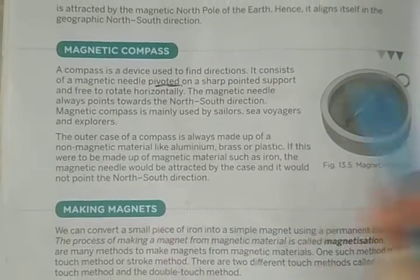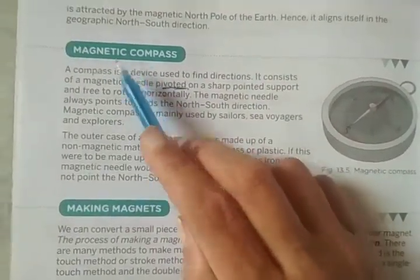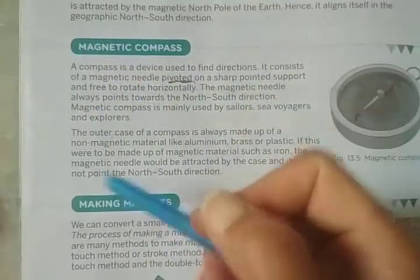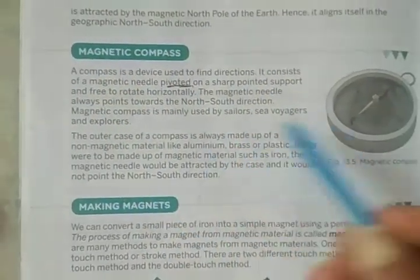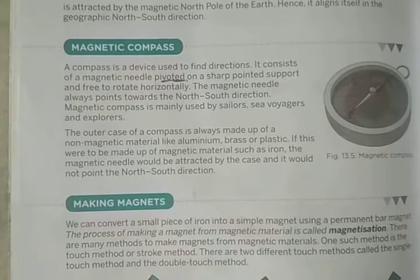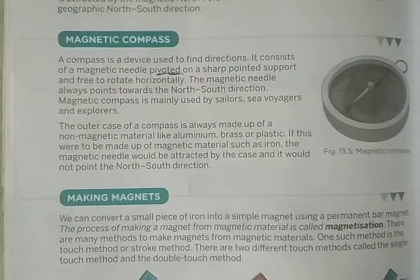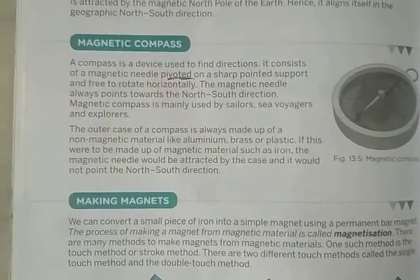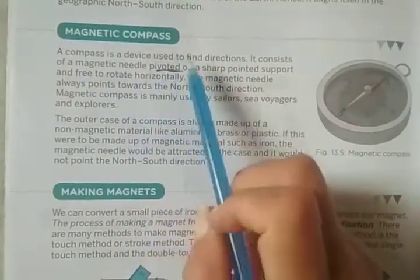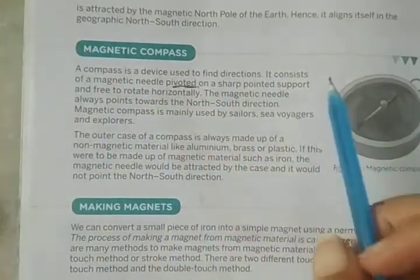There is another object called the magnetic compass. As we discussed earlier, if we freely suspend a magnet, it will lead us the direction. Similarly, a compass is used to find the direction.